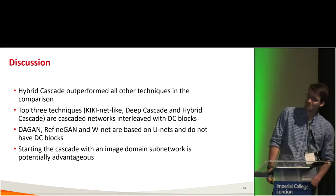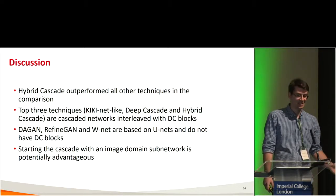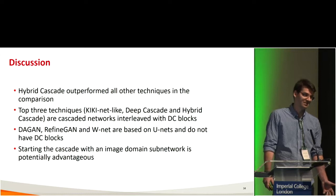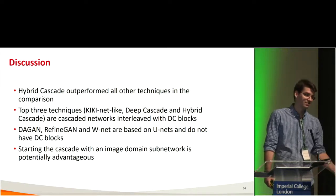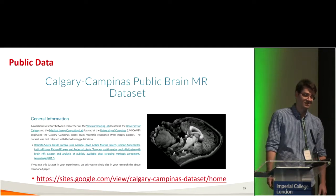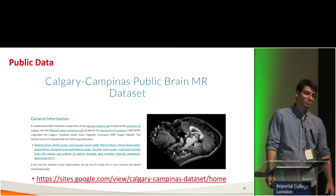In summary, hybrid cascade outperformed all other techniques. The top three techniques are cascaded networks interleaved with data consistency blocks. DAGAN, RefineGAN, and W-Net use U-Nets but lack data consistency — they suffered from this omission. Starting the cascade with an image domain subnetwork appears advantageous. The dataset used in these experiments has been made publicly available as part of the Calgary-Campinas Public Brain MR Dataset, with both single-channel and multi-channel data available for download.